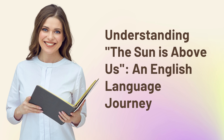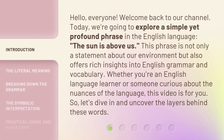Understanding the sun is above us — an English language journey. Hello everyone, welcome back to our channel. Today we're going to explore a simple yet profound phrase in the English language: the sun is above us. This phrase is not only a statement about our environment, but also offers rich insights into English grammar and vocabulary. Whether you're an English language learner or someone curious about the nuances of the language, this video is for you. So let's dive in and uncover the layers behind these words.